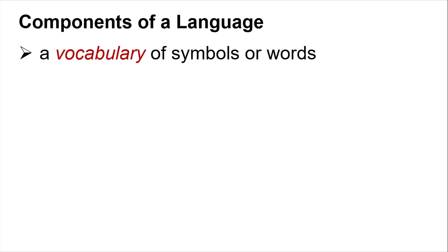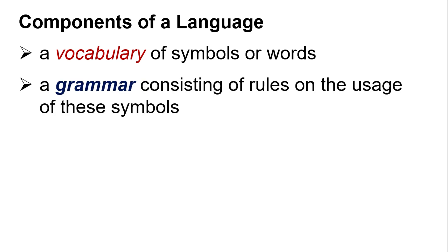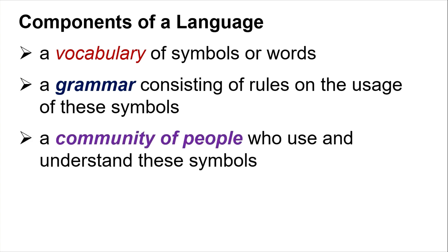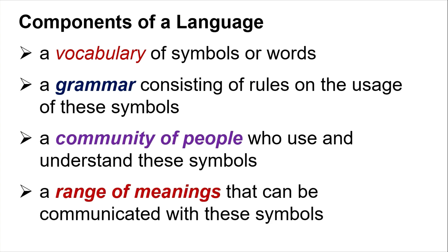Let's go to the components of a language. A language has vocabulary — symbols or words — and it has grammar. It also requires a community of people who use and understand these symbols, and a range of meanings that can be communicated with them. In mathematics, we have a series of symbols or words used in this language. Grammar is very important to understand what is going on in an equation or formula — whether we need to add, subtract, if it's less than, if it's equal, and so on. The people using mathematics must understand the symbols.